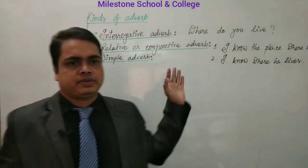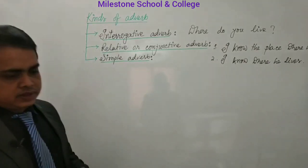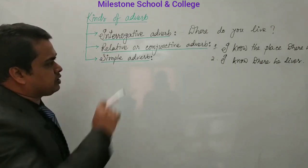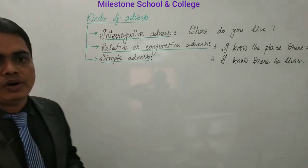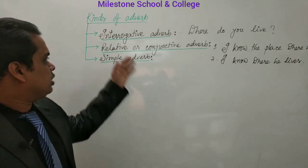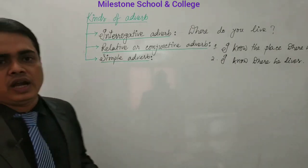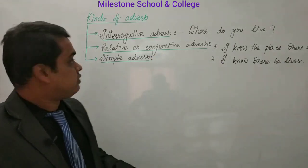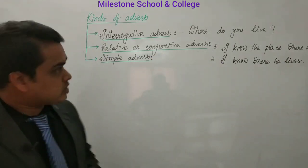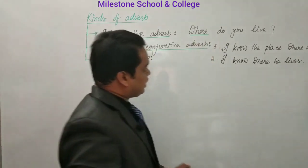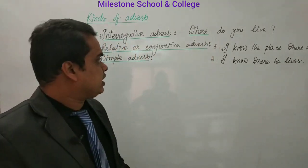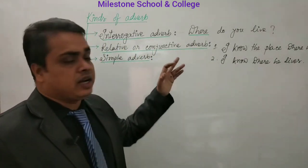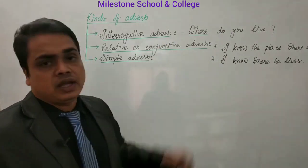We are going to learn the kinds of adverbs. Based on function, there are three types: interrogative adverbs, relative or conjunctive adverbs, and simple adverbs. First: interrogative adverbs. The adverb that makes a question — for example, 'Where do you live?' This adverb indicates place and makes a question. If an adverb makes a question, it is called an interrogative adverb.